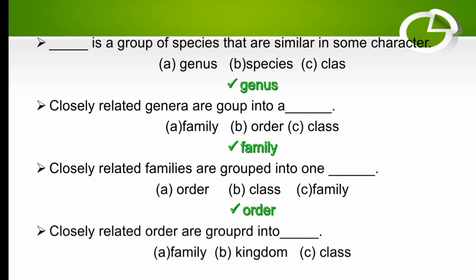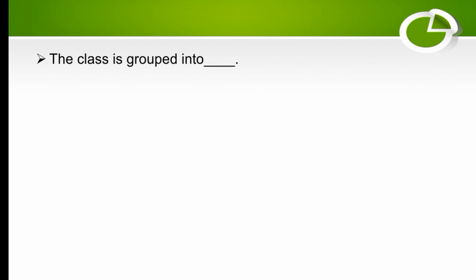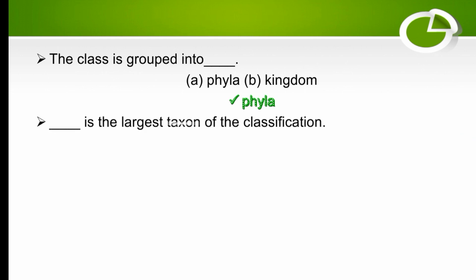Closely related orders are grouped into class — the right option is class. Species are grouped into genus, genera into family, families into order, orders into class. The class is grouped into phylum, which is the second largest taxon.